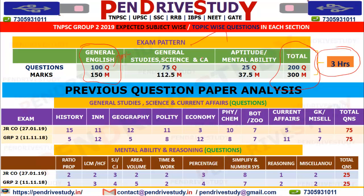General Science and Current Affairs account for 75 questions. Next, there are 25 questions from Mental Ability, Aptitude, and Reasoning. That is the overall exam pattern.